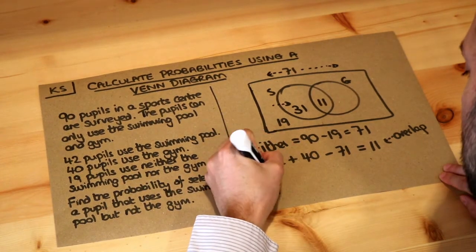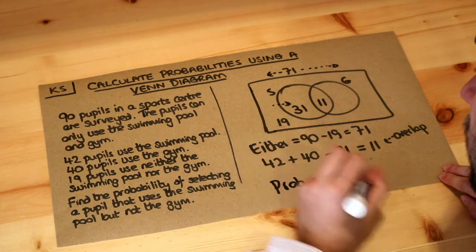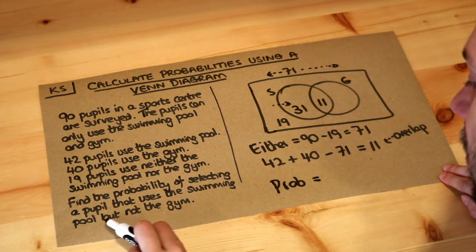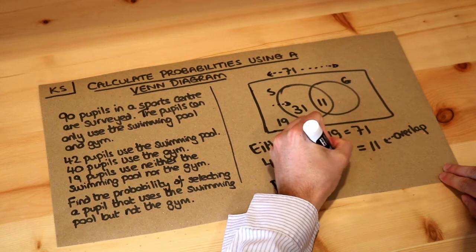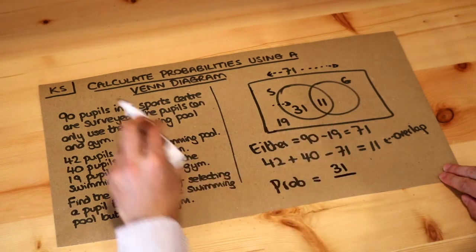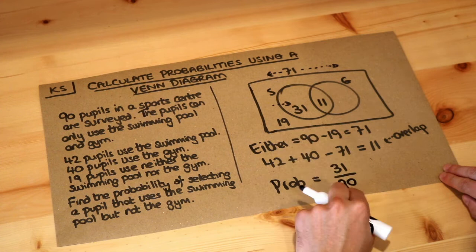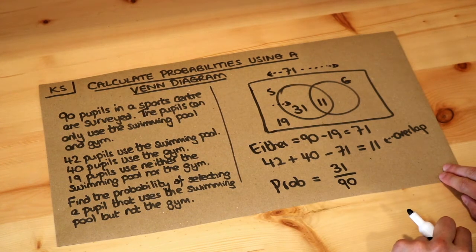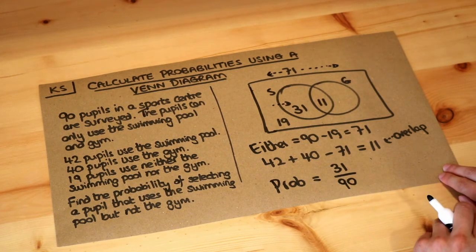So to get that probability then we just do the number of people that use the swimming pool but not the gym, 31, out of the total number of people. So out of the 90 people, 31 people use a swimming pool but not the gym. And that's the final answer.